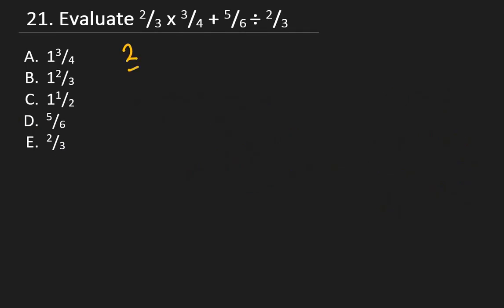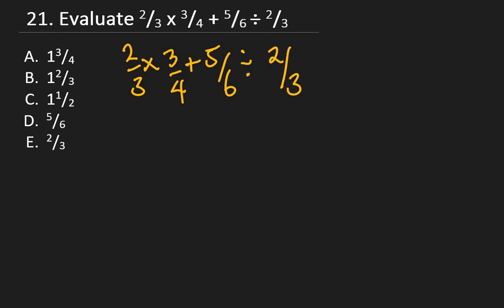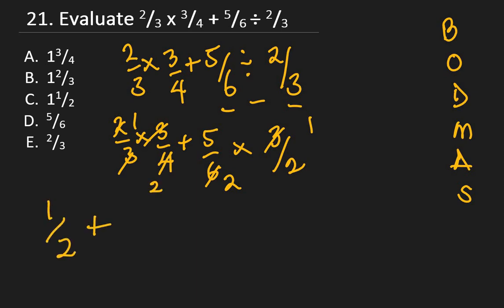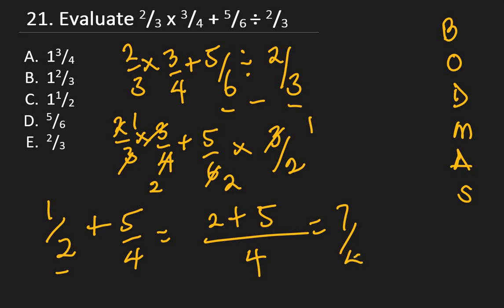Question 21: Evaluate 2/3 × 3/4 + 5/6 ÷ 2/3. Using order of operations, solve division first: 5/6 ÷ 2/3 = 5/6 × 3/2 = 5/4. Then 2/3 × 3/4 = 1/2. Now add: 1/2 + 5/4. LCM of 2 and 4 is 4: 2/4 + 5/4 = 7/4 = 1 and 3/4. The right answer is A.